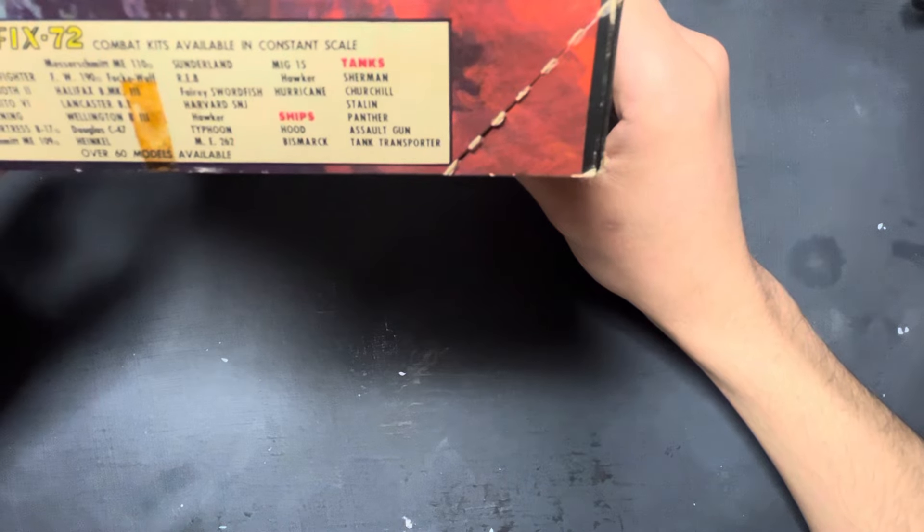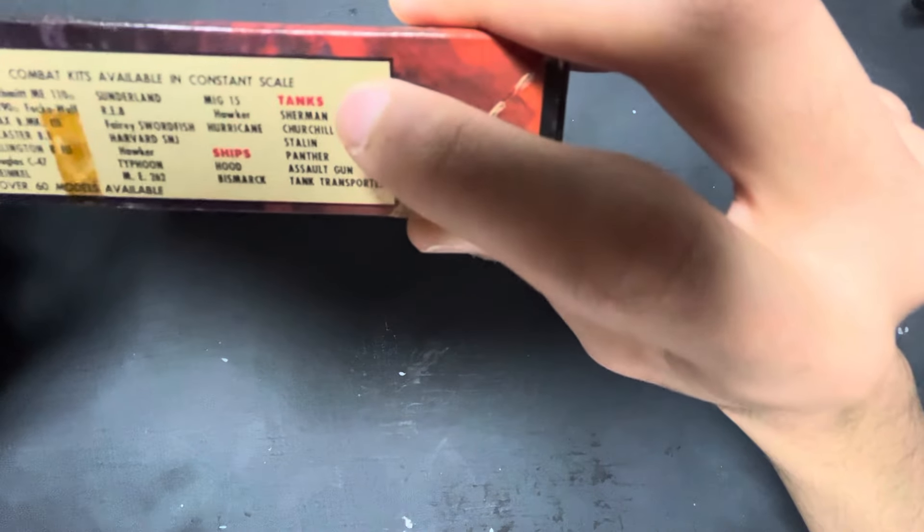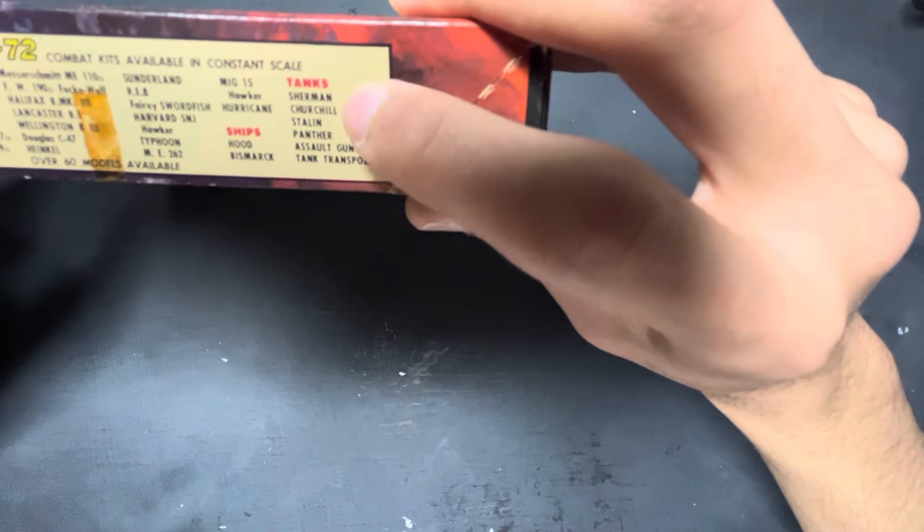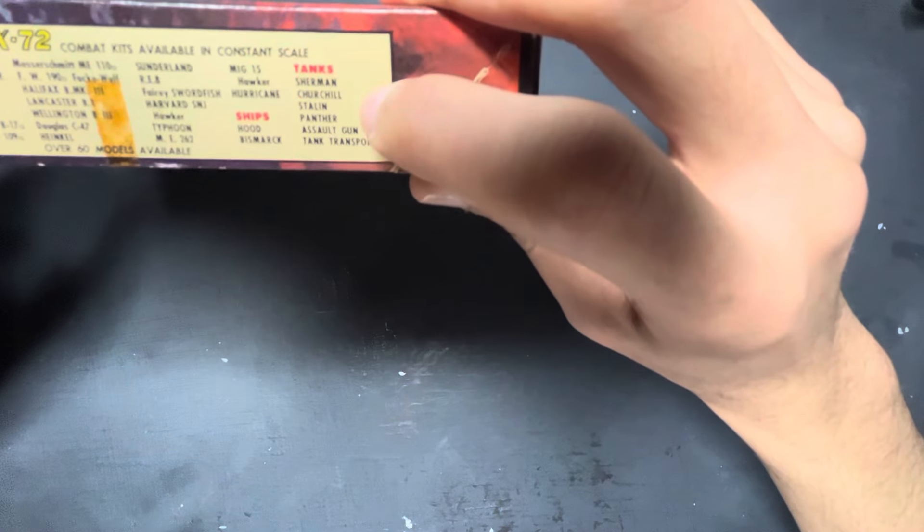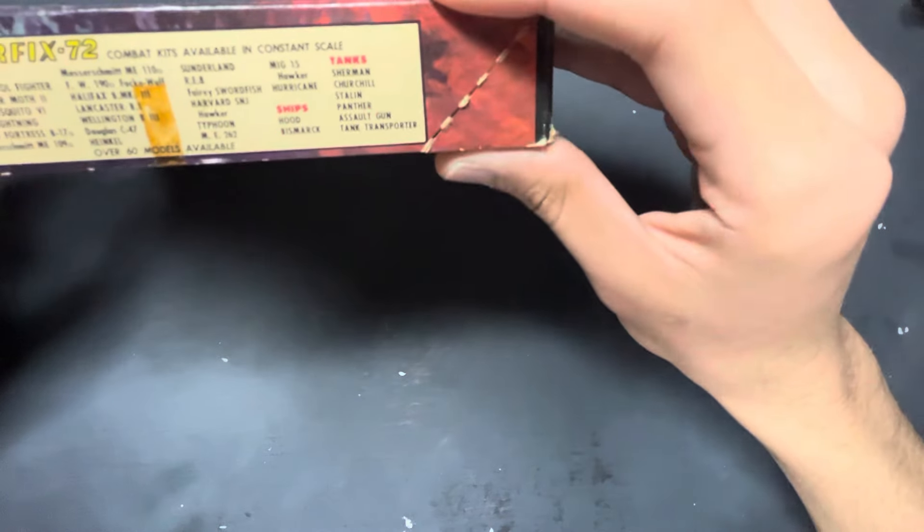On the back it has all their available models at this time. This is probably very old because it says that the only available models tank-wise are Sherman, Churchill, I don't know what the Stalin is, Panther and assault gun, and a tank transporter. I think this is the JS Stalin.